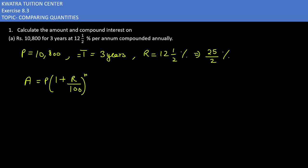n you can also write as t. Now here what you have to do? Put the principle value which is 10,800. Then you have 1 plus r. r value is 25 over 2. And multiply by 100, because 100 is given below. Then raise to power 3 you will write here. Why? Because time period is 3 years.